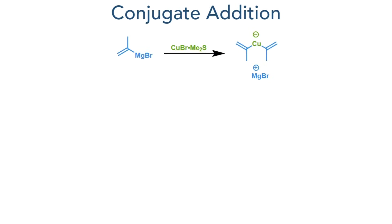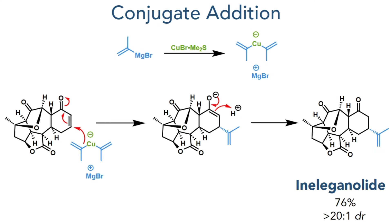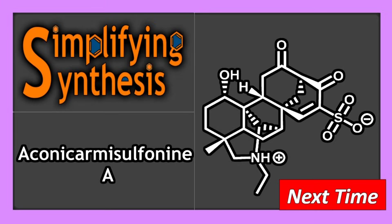With this in place, the synthesis could then be completed with a simple conjugate addition. Isopropenyl magnesium bromide first reacts with copper bromide dimethyl sulfide, forming an organocuprate reagent that preferentially reacts with the conjugate position rather than direct addition to the ketone. This reaction showed excellent stereoselectivity, preferentially adding to the desired face with a greater than 20:1 dr and a 76% overall yield of the target product, ineleganolide. Well, that's everything for this short and rather remarkable synthesis.